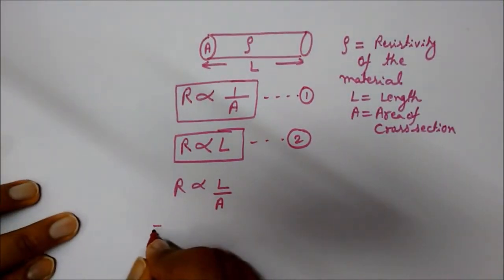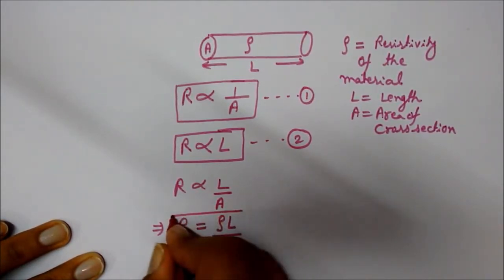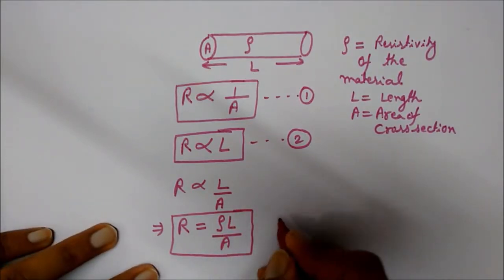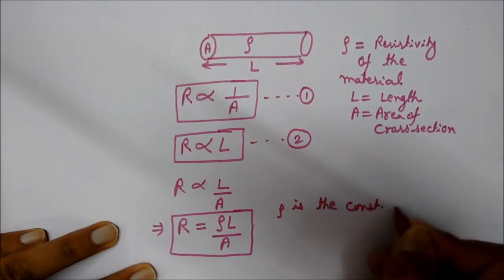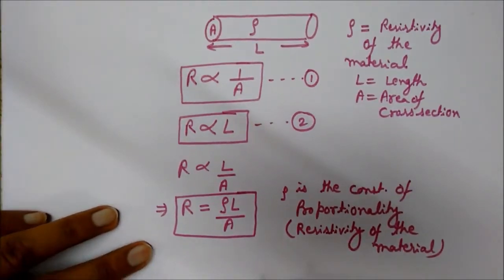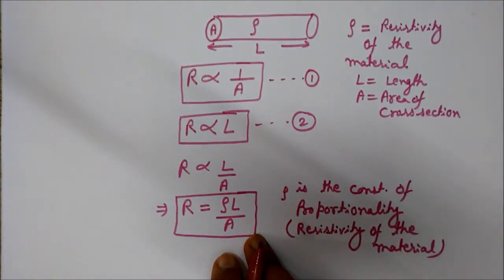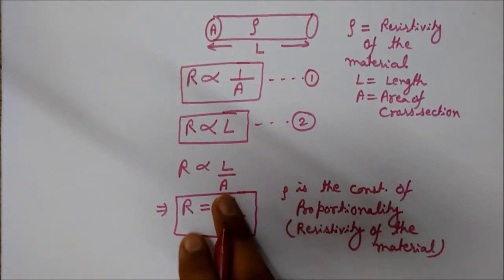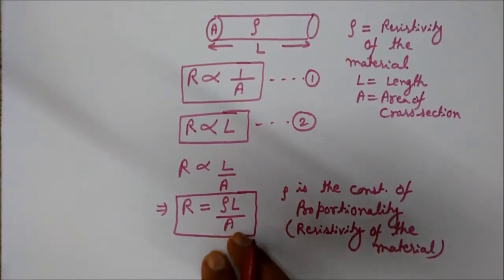We can write this as R equals rho times L divided by A. This is a very important relation. Here, rho is the constant of proportionality and is the resistivity of the material. So R equals rho into L by A — rho is the resistivity of the material of the resistor and differs for different materials.